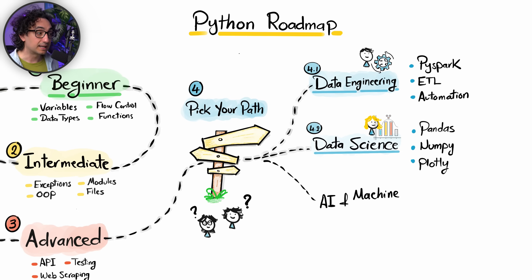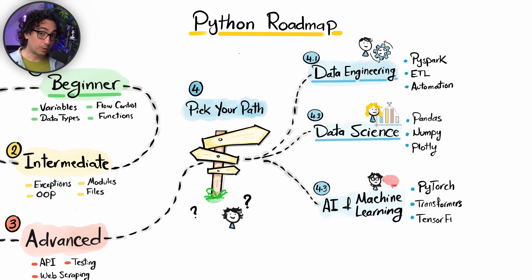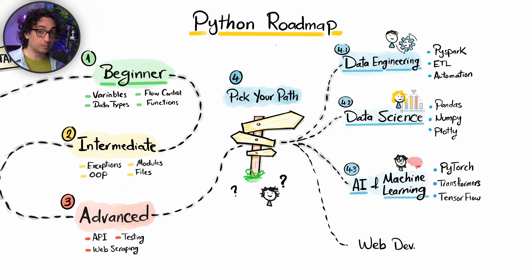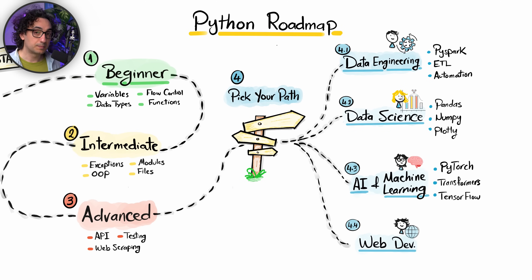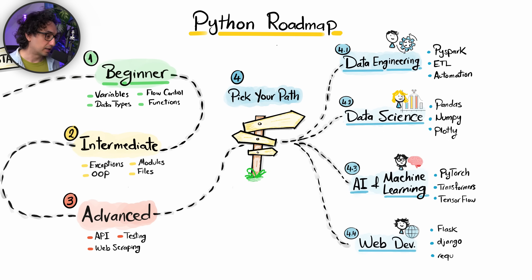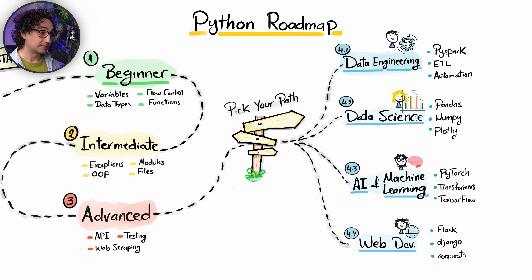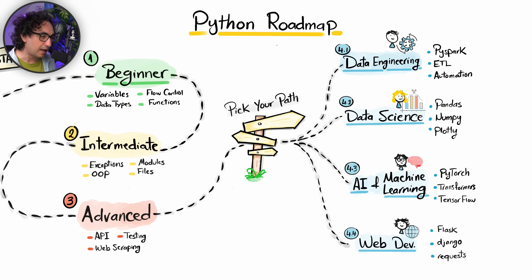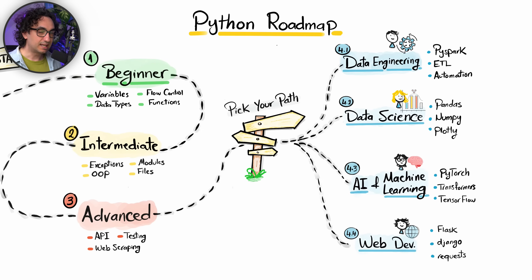If you want to build smart systems and models, you'll work with Python libraries like PyTorch, Transformers, and TensorFlow. Another option is web development: if you want to build websites and web apps, you can use frameworks like Flask, Django, and Requests. There are also other options like game development. My personal journey: I learned data engineering first, then picked up Plotly and Pandas from data science, and Transformers from AI. My recommendation is to pick one path, become an expert there, and gradually explore others.